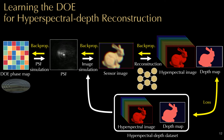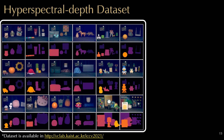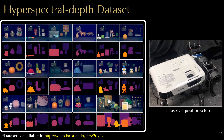But we are not done yet. One prerequisite for making this method work is a hyperspectral depth image dataset, which does not exist to date. So, we present the first hyperspectral depth dataset of 18 real-world scenes, captured by our custom setup combining a structured light depth imager and a liquid crystal hyperspectral imager.